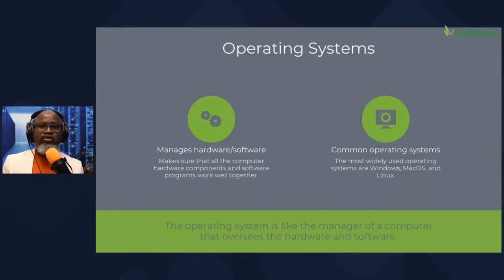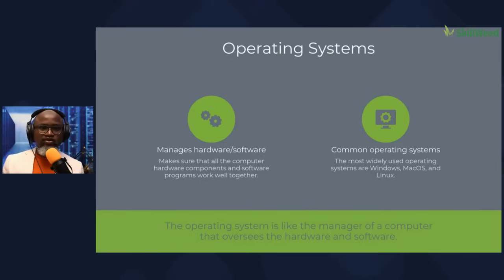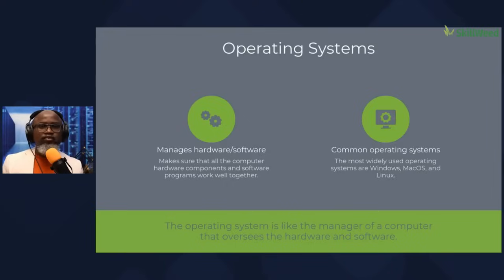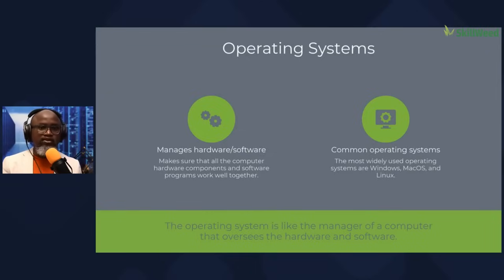Operating system — in simple terms, the operating system makes sure that all the hardware components and the software components work together. Don't forget we have the hardware, we have the software. So hardware will be like your phone, software like your WhatsApp. The operating system allows both of them to work together. Common operating systems: you're using macOS, the operating system for Apple; iOS for mobile; then we have Android for Android devices at the mobile device level.